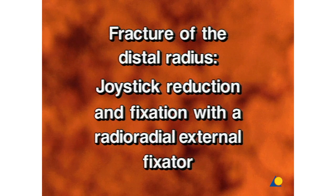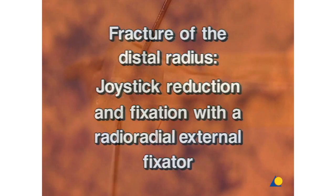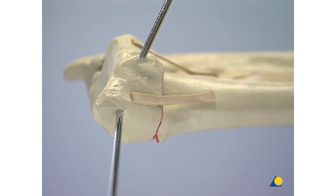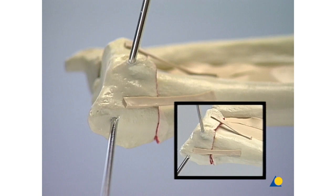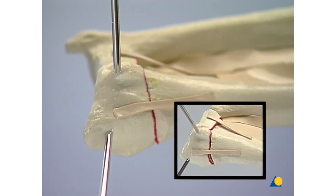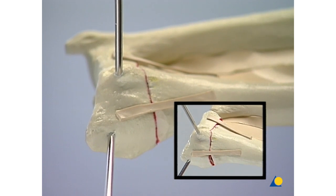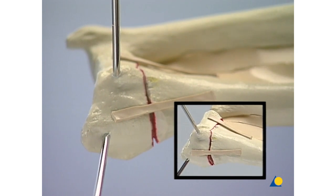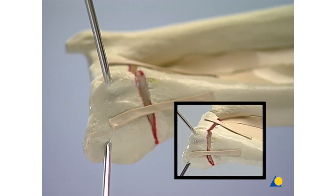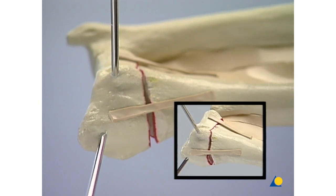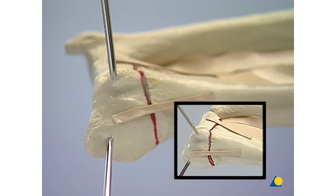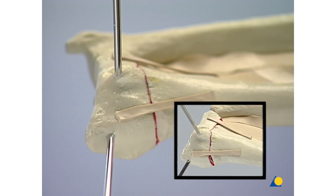Fracture of the distal radius: joystick reduction and fixation with a radio-radial external fixator. A 2.5 millimeter threaded K-wire is inserted into the tuberculum of Lister in the sagittal plane, and a second K-wire is inserted into the styloid process of the radius in the frontal plane. The wires serve as joysticks for the reduction of the fracture in both main planes. The flexion-extension alignment and the correct radio-ulnar alignment are easily attainable. After reduction, these two K-wires are combined with two additional threaded K-wires inserted into the proximal main fragment to form a radio-radial external fixator.